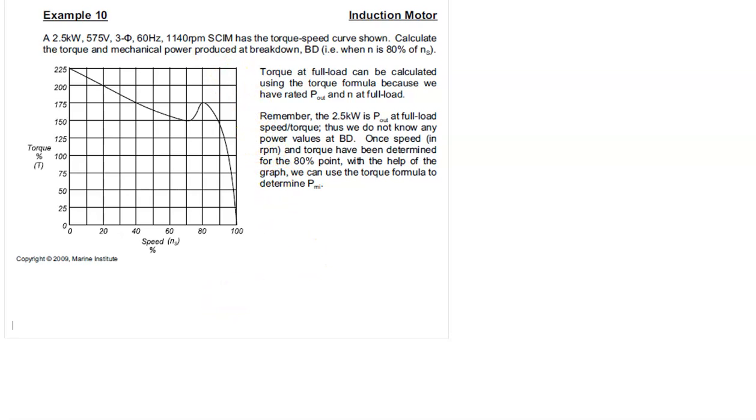Remember, to find the mechanical power produced at breakdown, we've got to use the graph, which means we have to know Ns so we can find the 80% speed point, because this here is breakdown, and we also need to know the rated torque so we can figure out what 175% of it is.